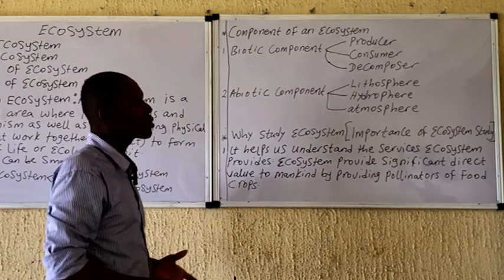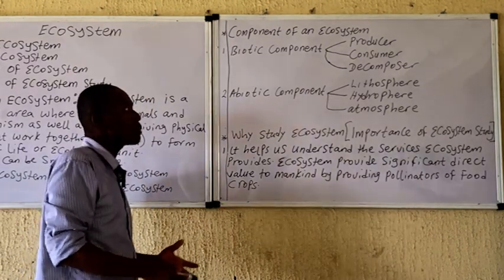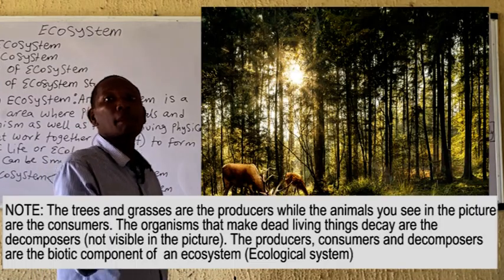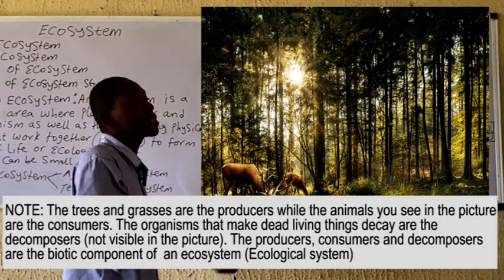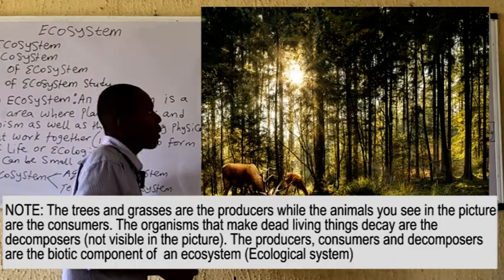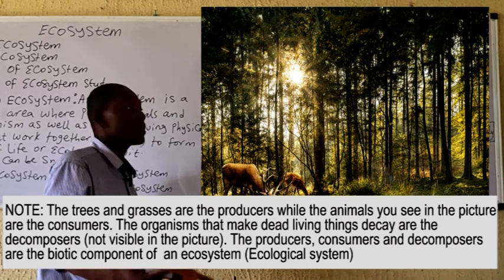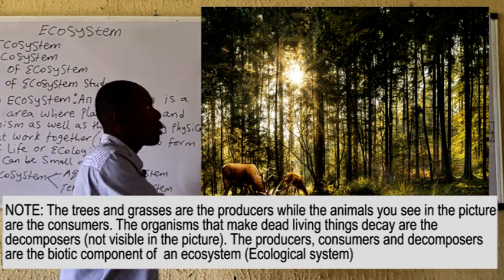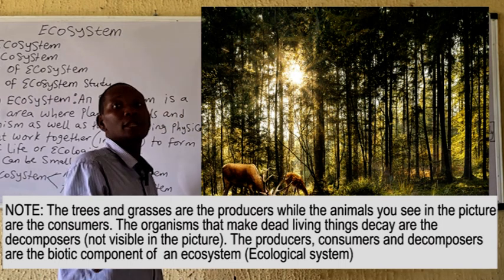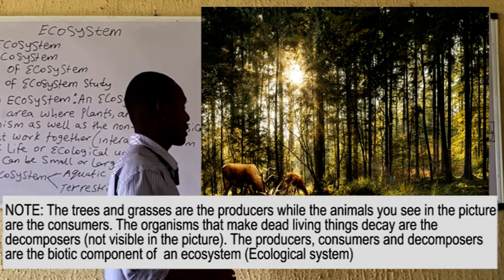In a forest ecosystem, for example, the producers are the plants and in some cases microorganisms that carry out chemosynthesis, while the consumers are the animals. Then we have the decomposers, which actually help to break down dead remains of plants and animals.